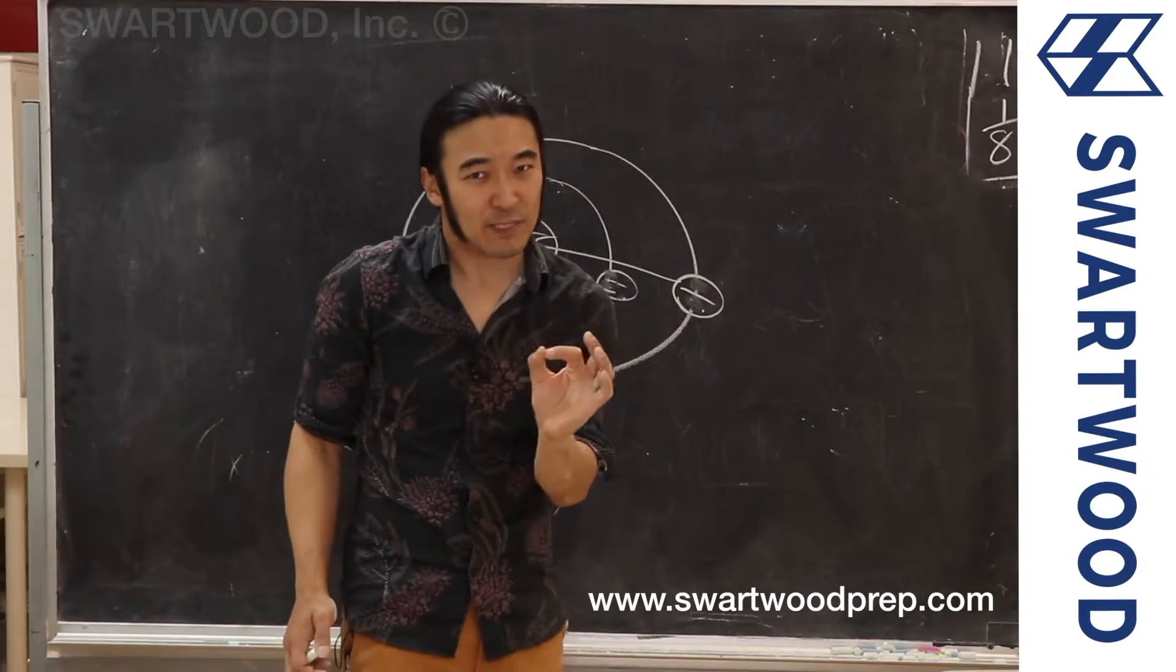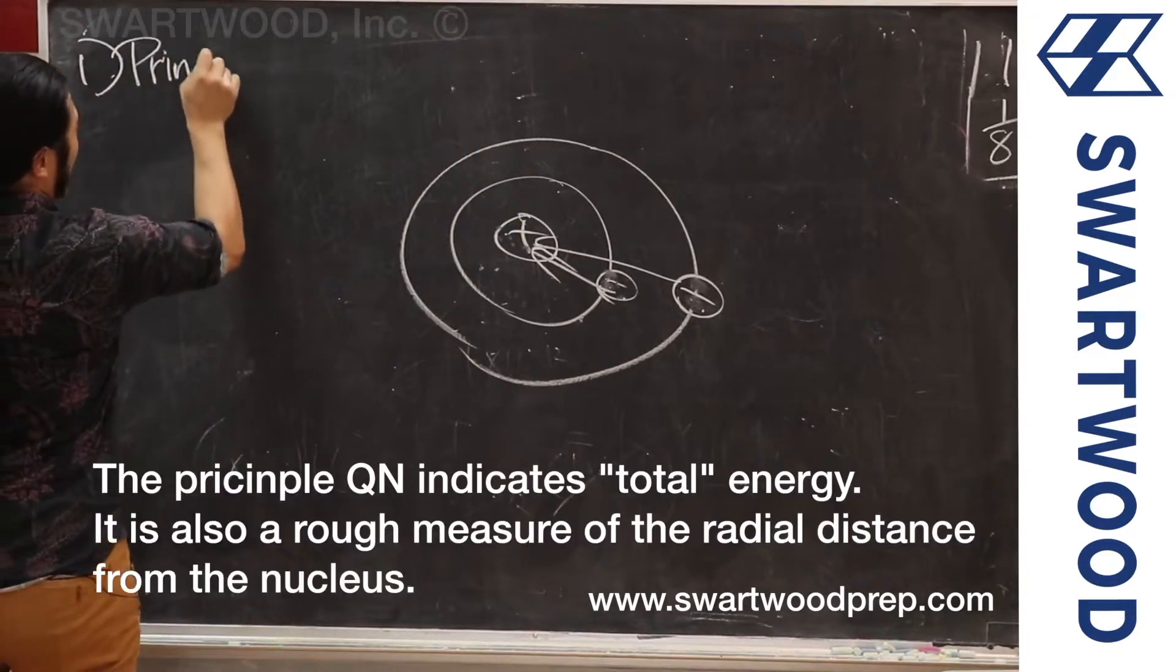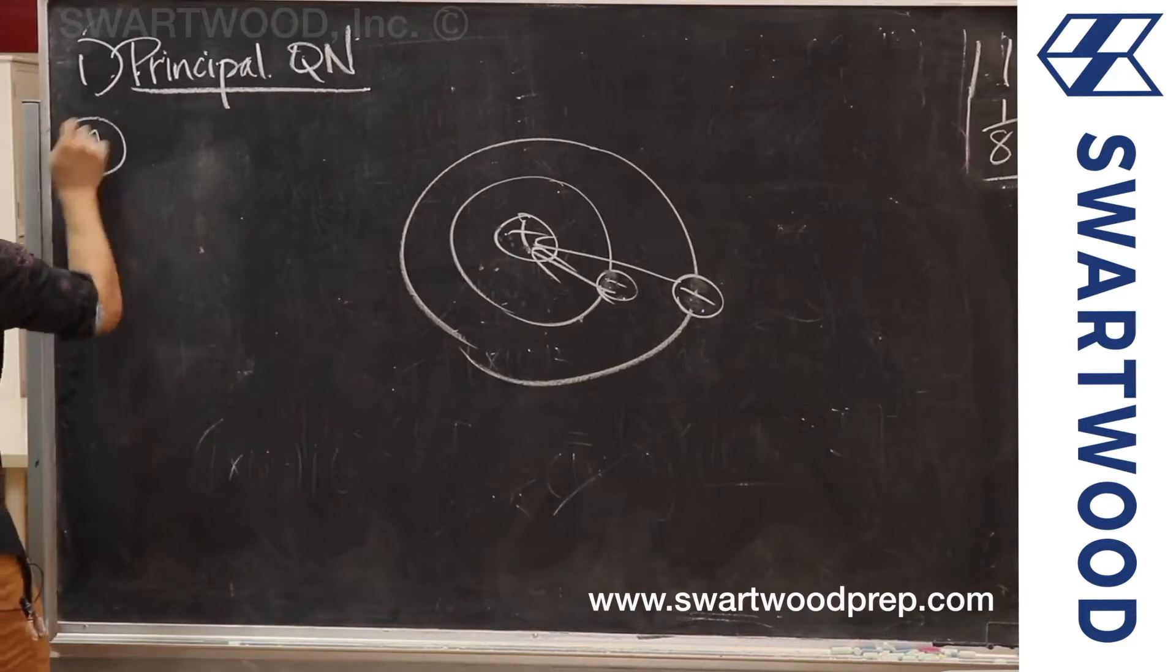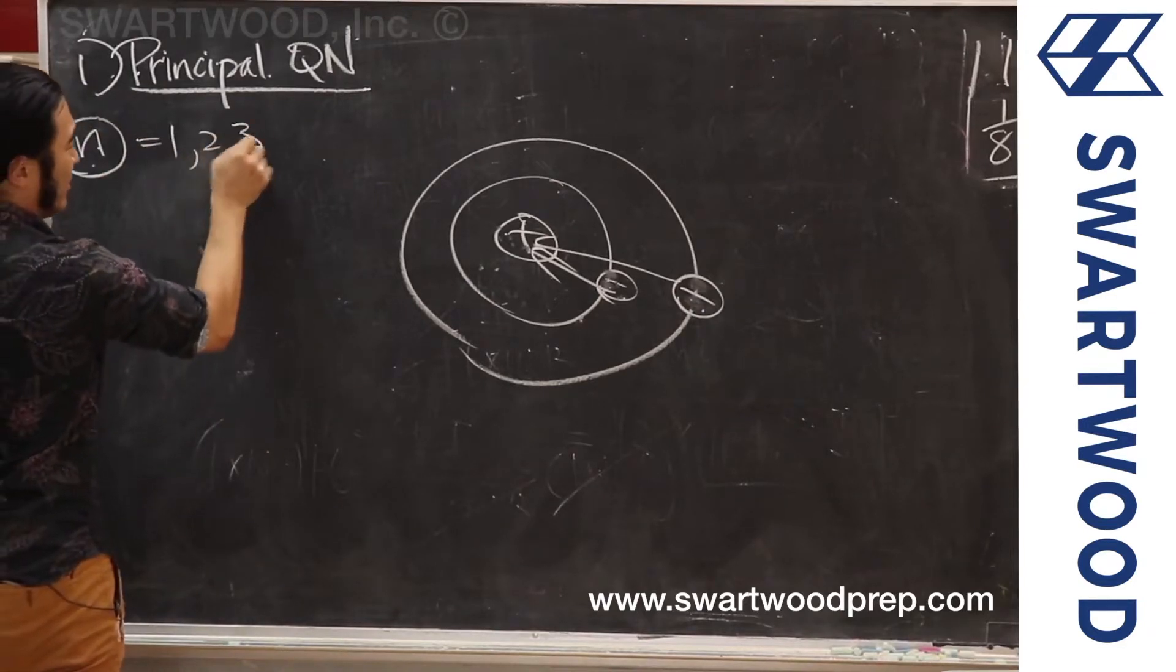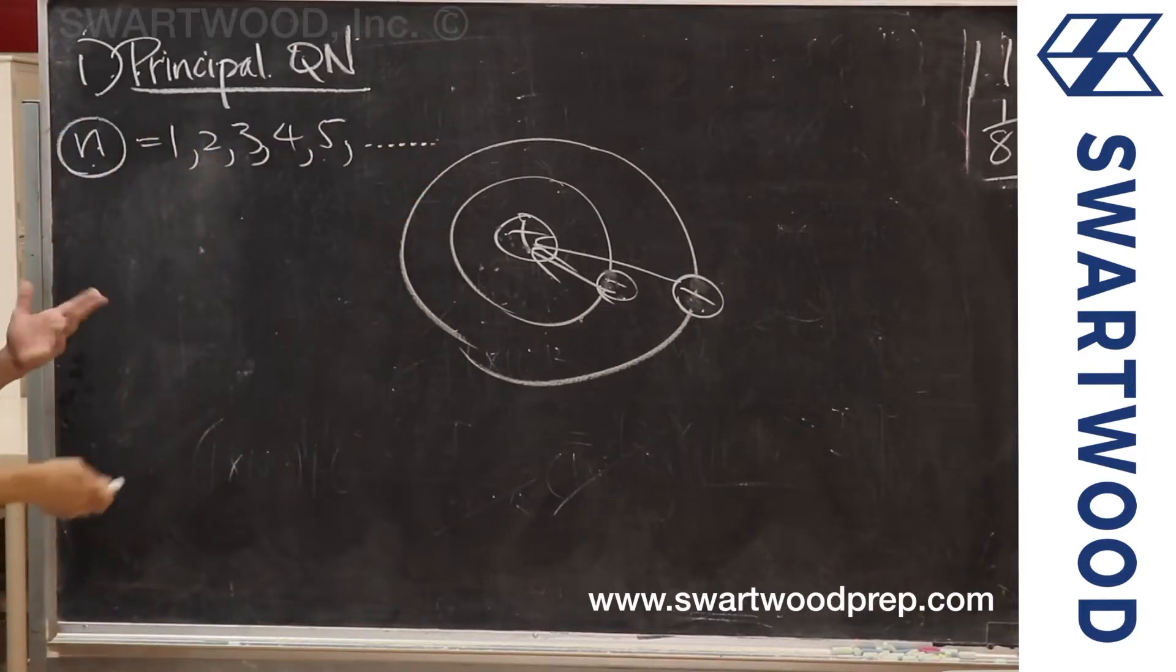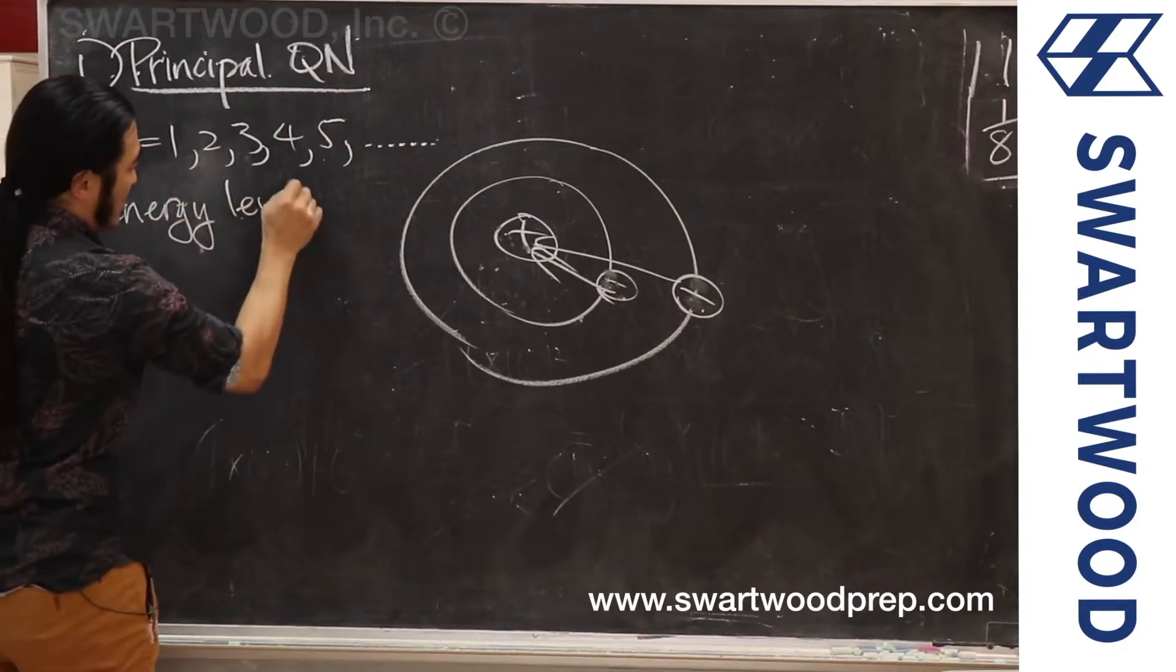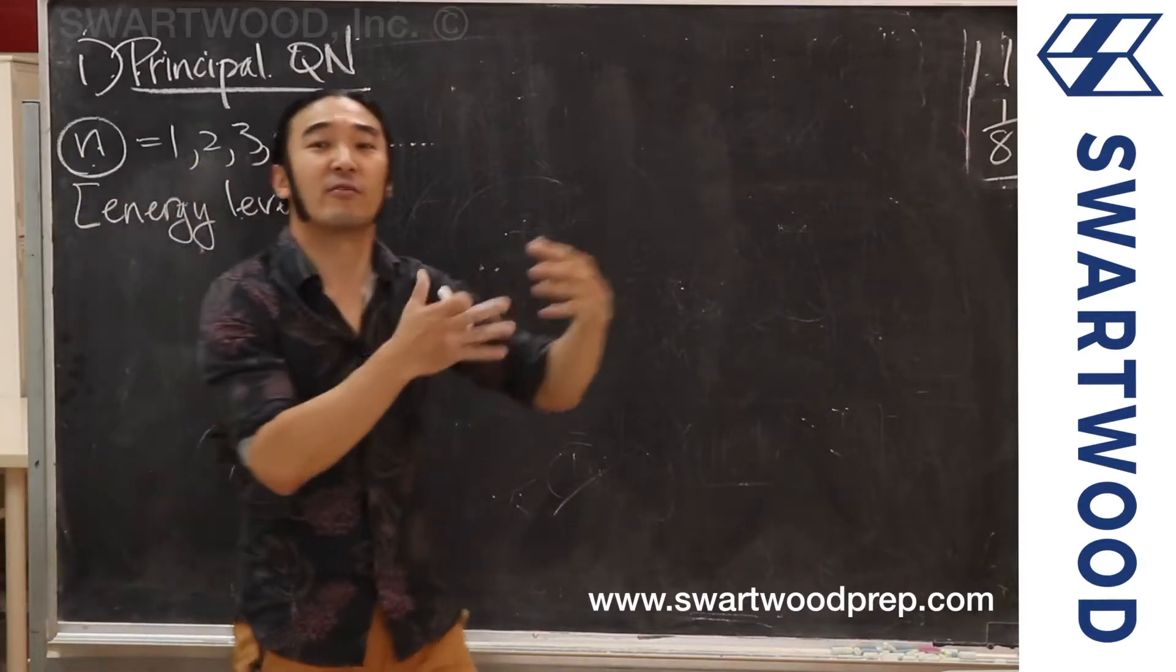So one of the things that encapsulates that idea is the principal quantum number. So that's number one. The principal quantum number, n, can range from the first, the second, to the third, to the fourth, to the fifth, out to infinity. This is what I like to think of as the old school version of energy level. The higher the energy level, the more energy you have, because roughly, the farther out you are.